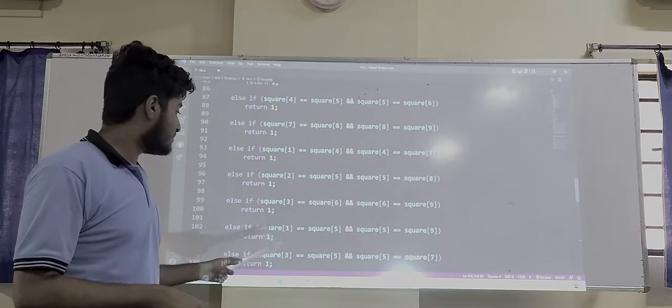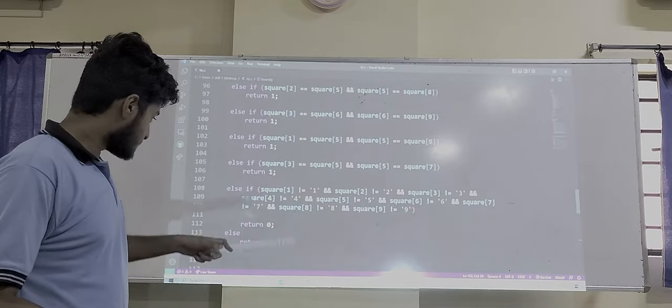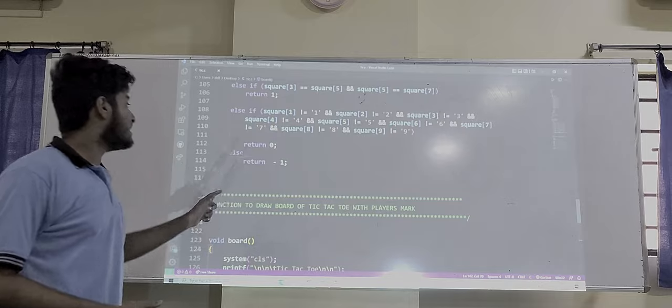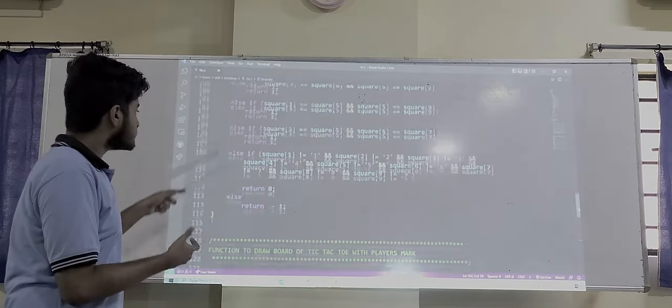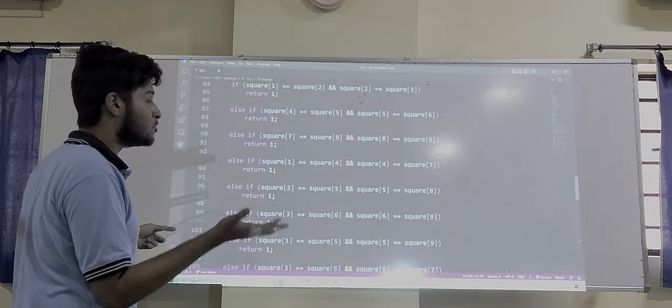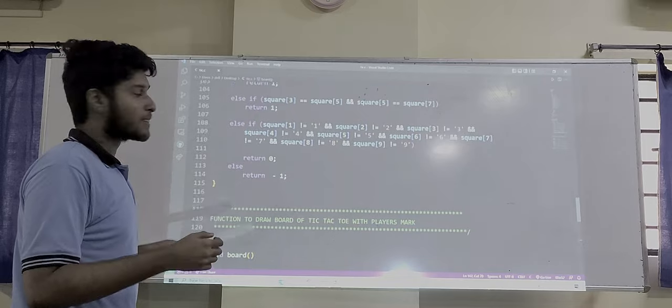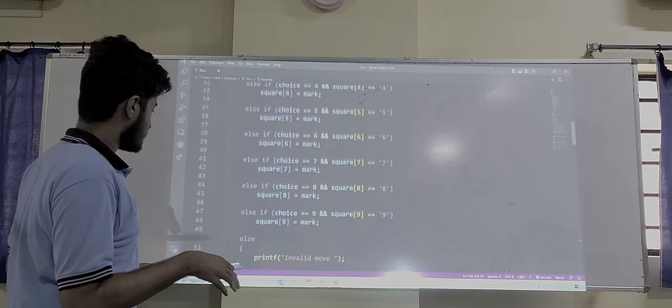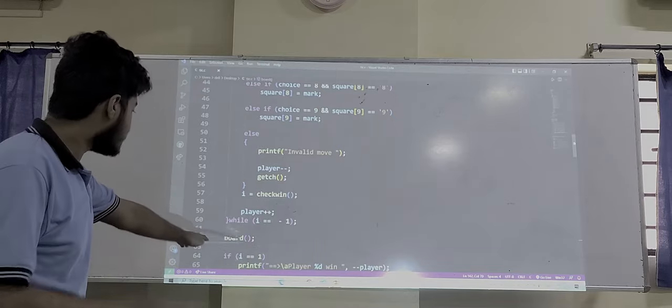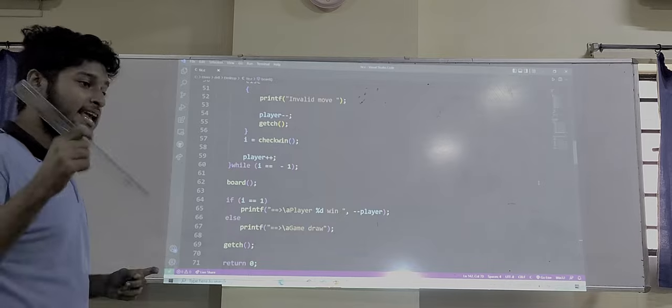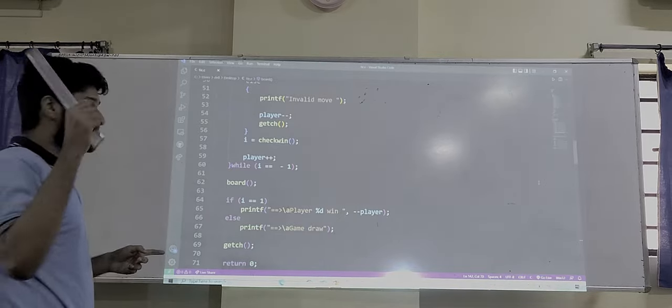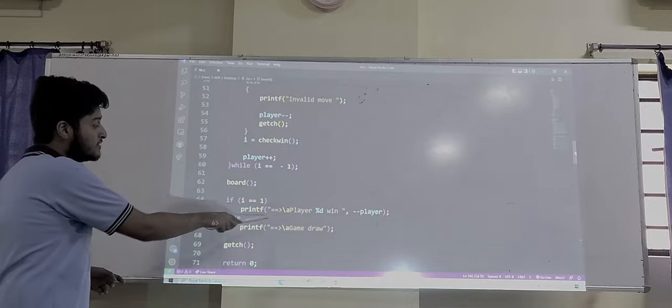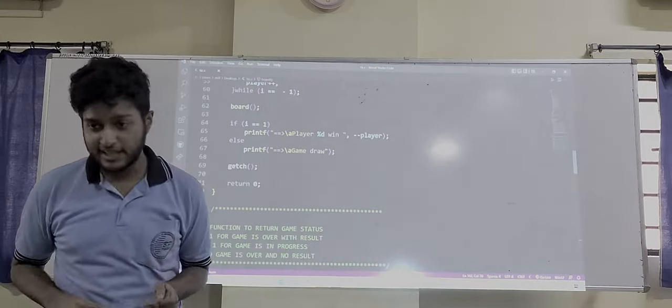If three values are not same, it will check further. If there is no match, that will become a draw. And if it's a draw, it will return as minus 2. Here we can see that if i is equal to minus 1, means the game is still going. And if i is equal to 1, means it returns as 1, that means the game is won. And if that doesn't happen, the game will be just a draw, means no one has won. That's the end of it.